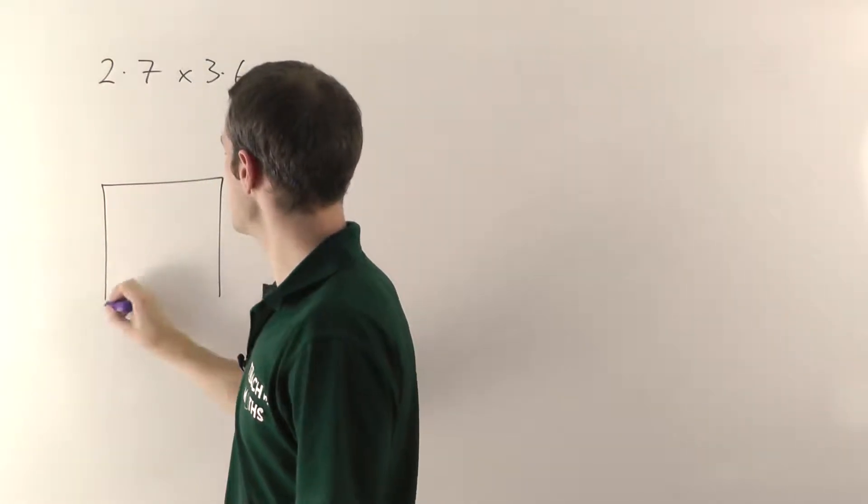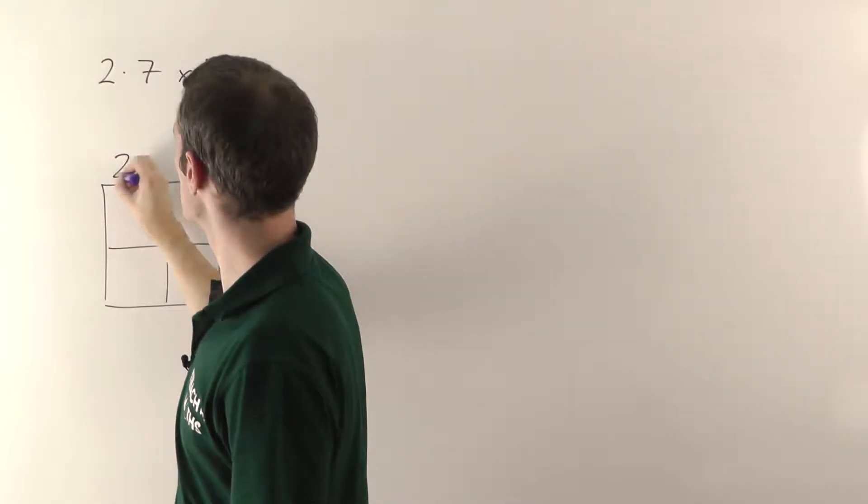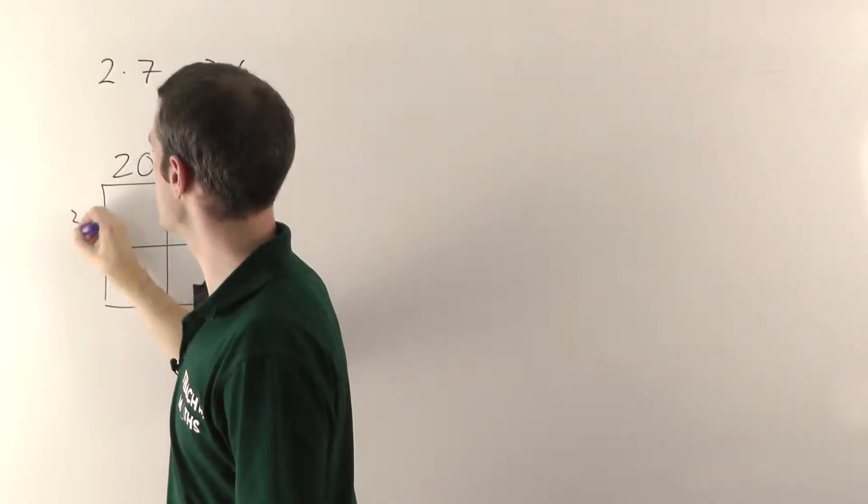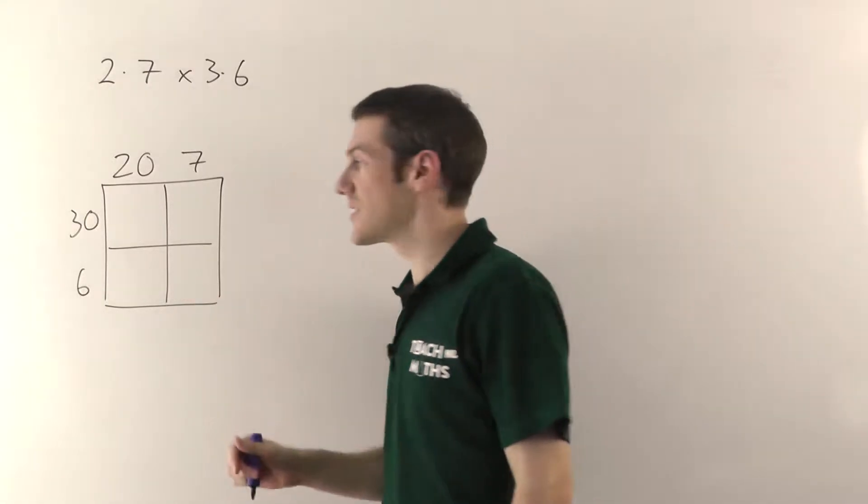So we have a 2 by 2 grid because it's a 2 digit number by a 2 digit number. So it's going to be 27, because we're ignoring the decimal point, times 36.